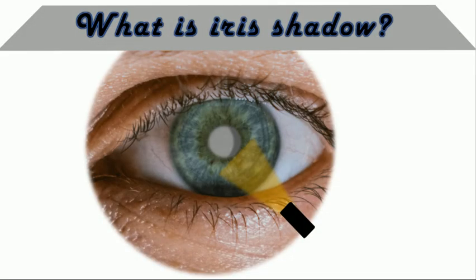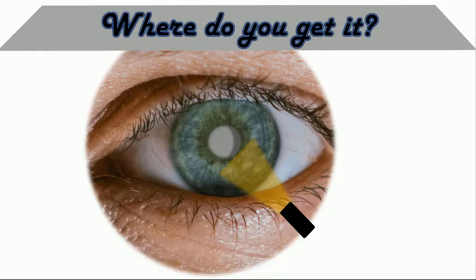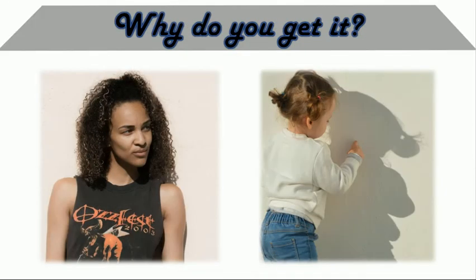So what is an iris shadow? It is a shadow cast on the lens by the iris when light is shone on the eye from the side. Where do you get it? An iris shadow is seen in an immature cortical cataract.